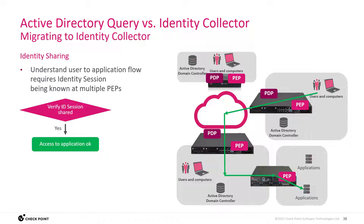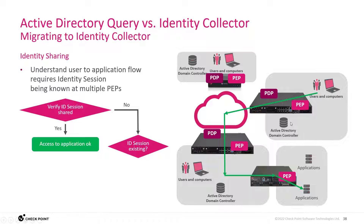If we can access the application, this can be fairly assumed. But if this is not the case, we need to check the identity session sharing and existence first on the gateway closest to the Active Directory server that has learned the original login event. Then we go to the remote gateway — has this gateway learned the identity session?